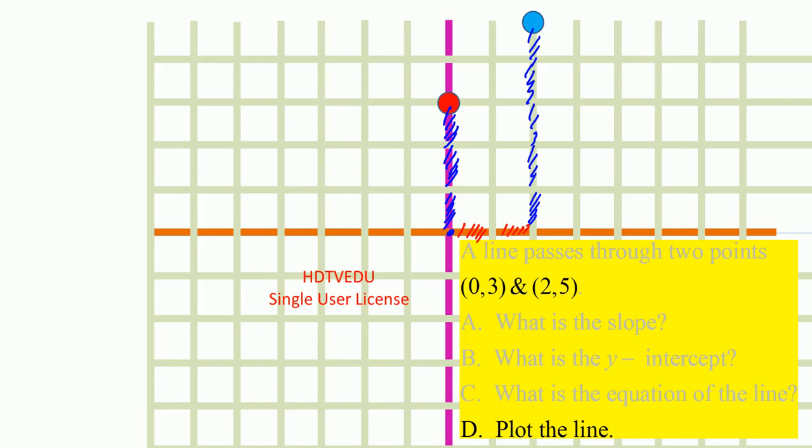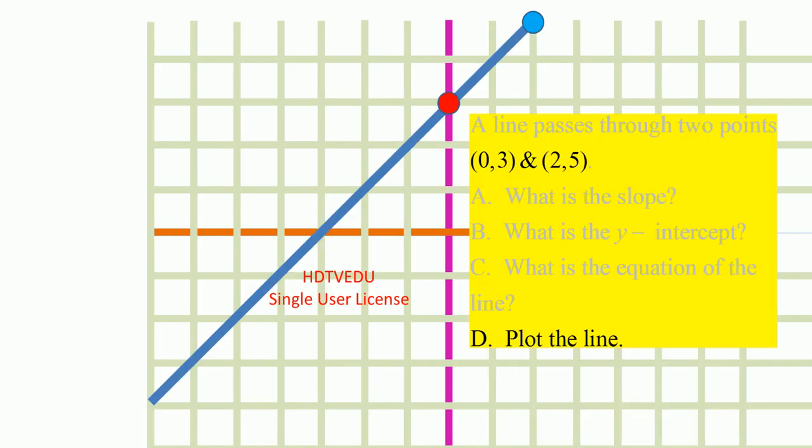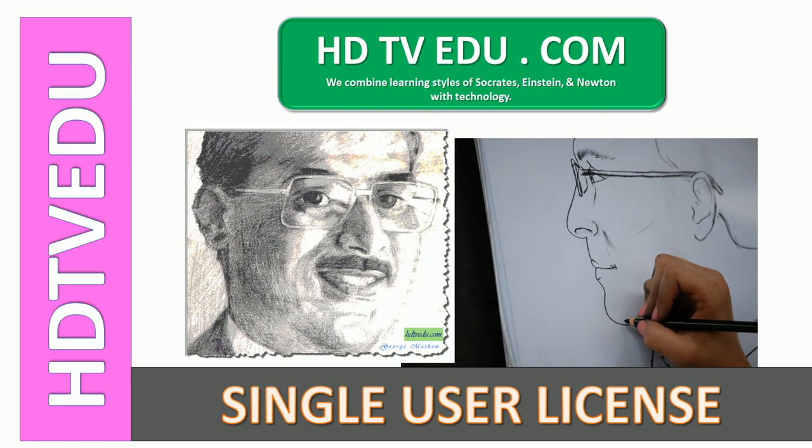So with those two points all you have to do is join and extend the line and this is George Matthew signing off good luck.